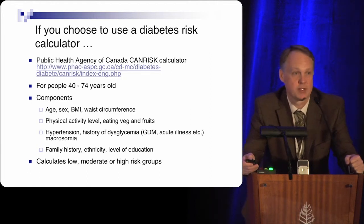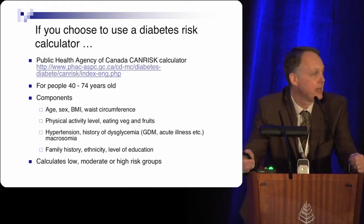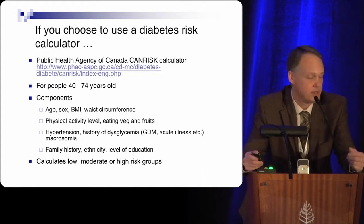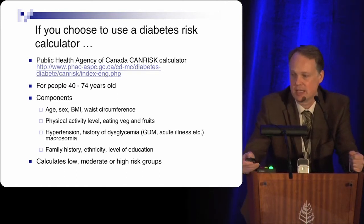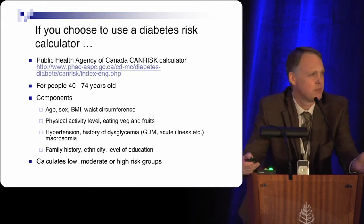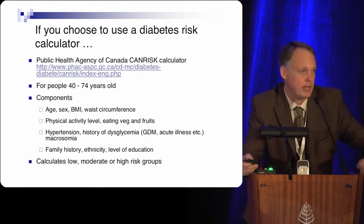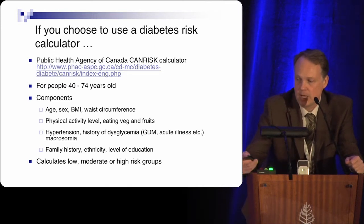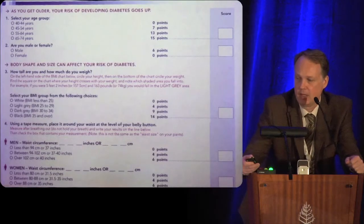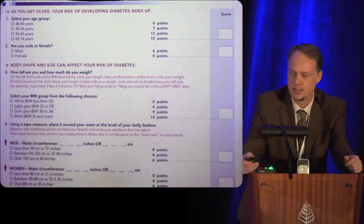Before doing any testing, you want to assess their risk. In Canada, using the DIASCAN study database from 2001, they developed the CAN risk assessment, available mostly in pharmacies. You could have it in your waiting room and have patients fill it out. The components are age, sex, BMI, and waist circumference — we're going to go through it now.